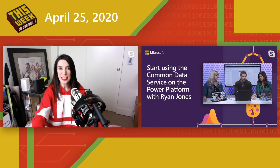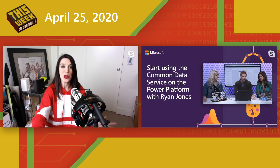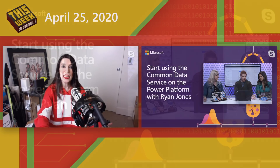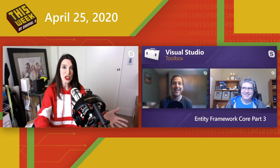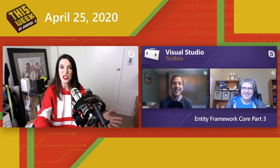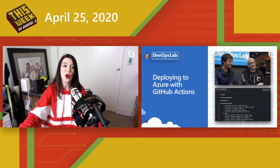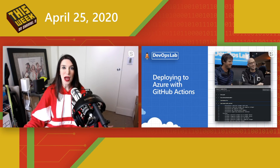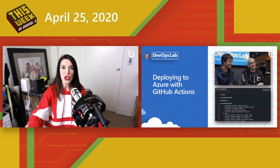On Channel 9 this week, we've got lots of great content. There's a show on Power Apps with Ryan Jones about how to start using Common Data Services on the Power Platform. Over on VS Toolbox, Robert covers Entity Framework Core Part 3 of a series — and since we just mentioned the new Entity Framework version is in preview, that's a great place to get more information. And over on the DevOps Lab, Ed and Damian talk about deploying to Azure using GitHub Actions. I've got links to all of these shows in the show notes.